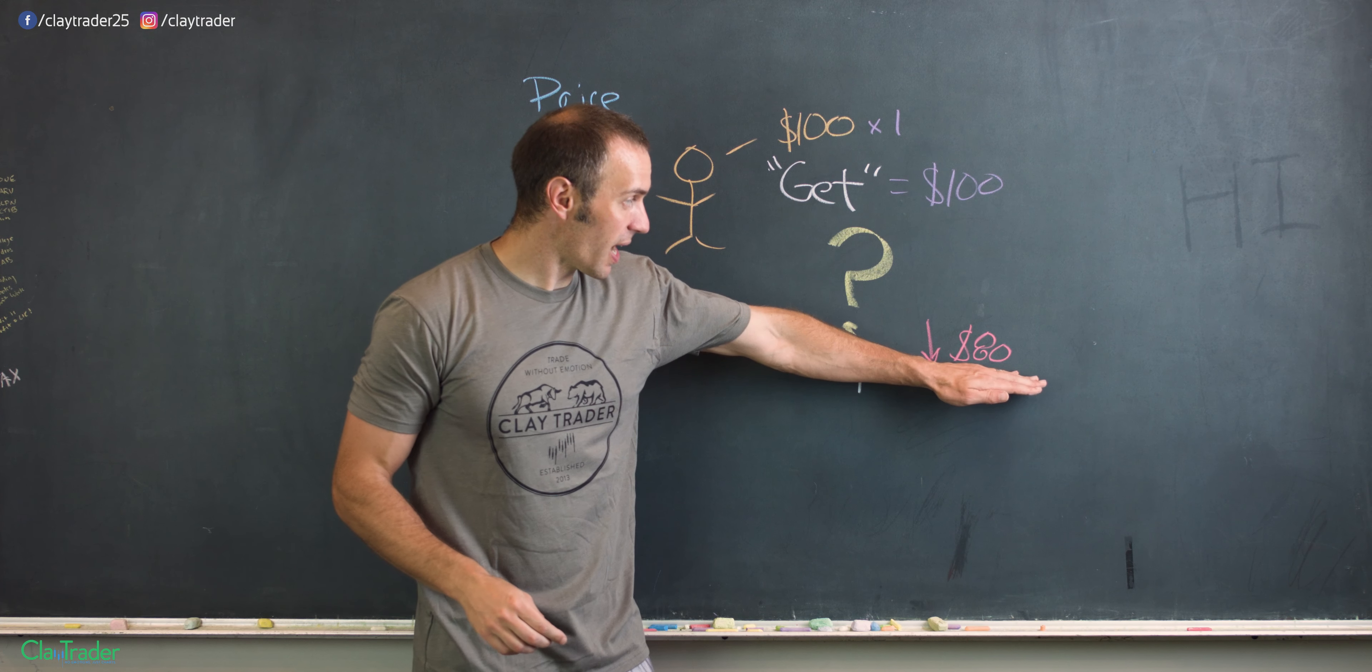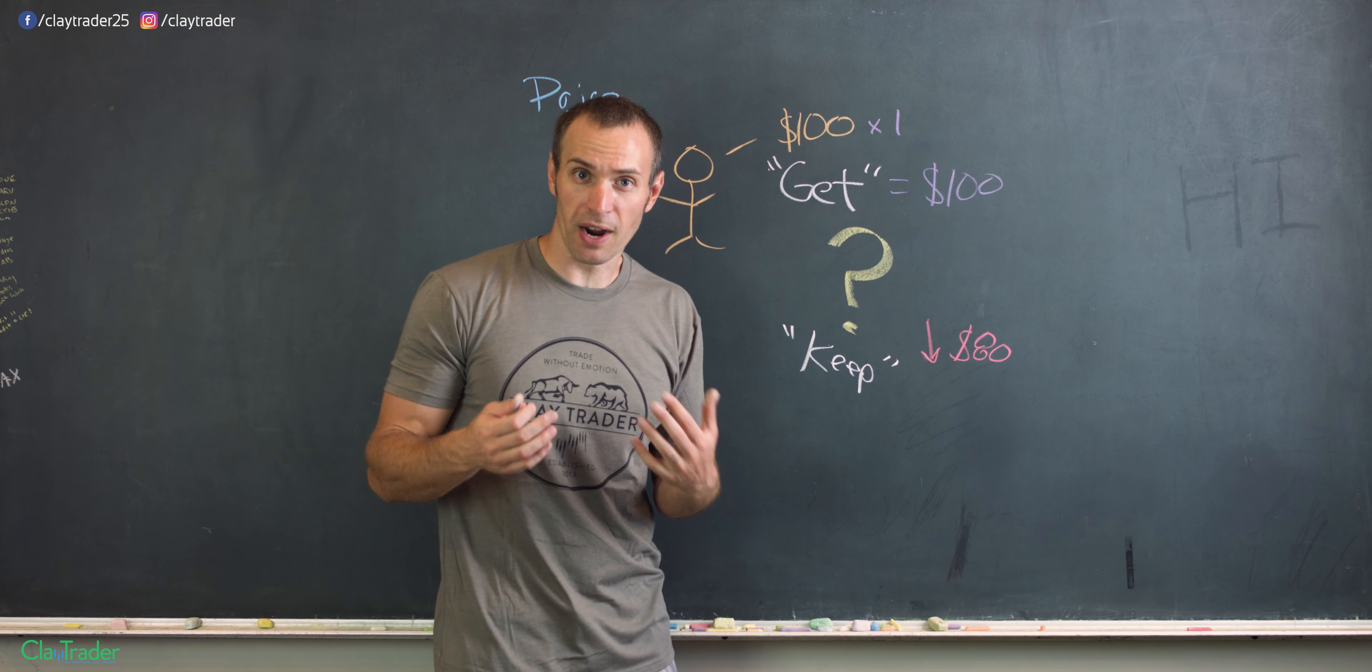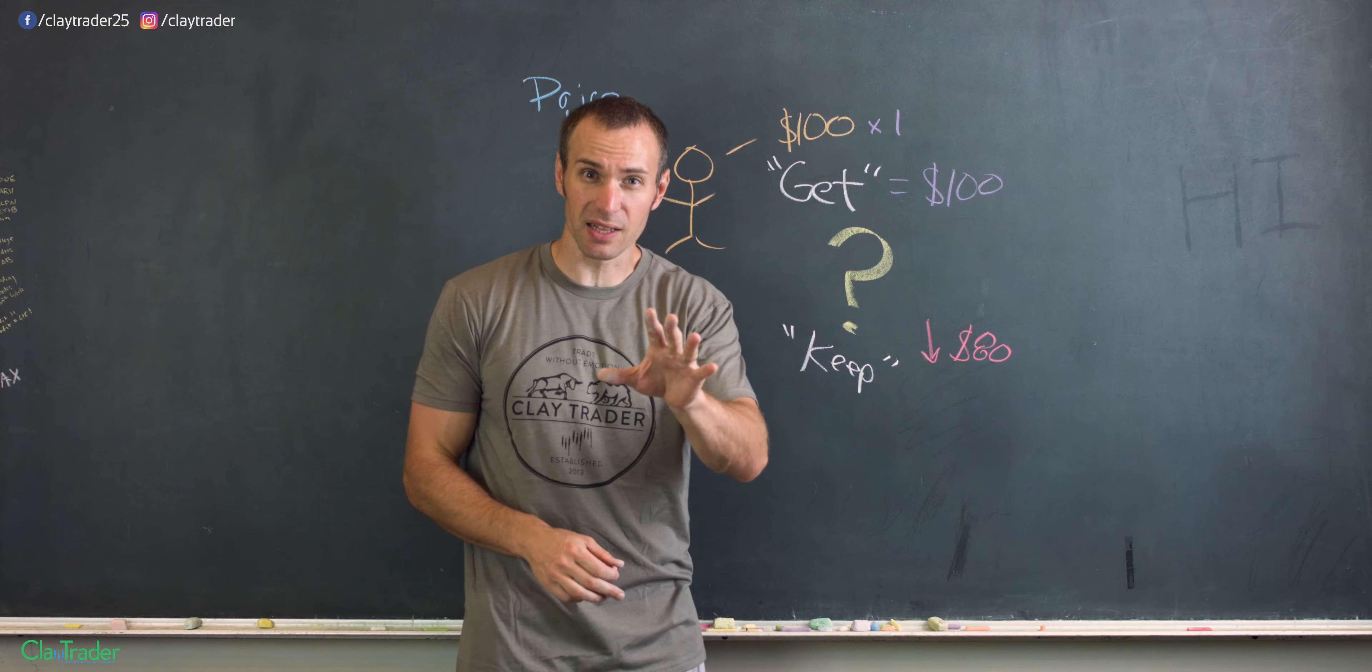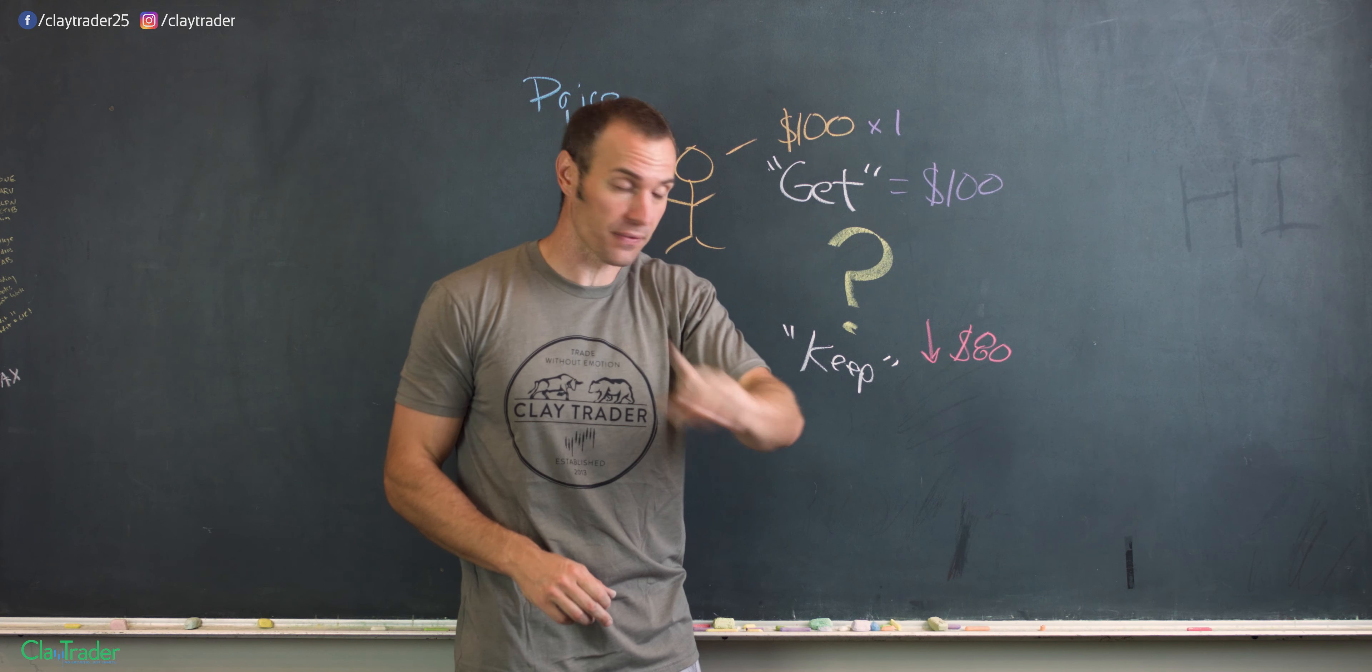So that means at this point in time, John can go out there and buy the stock for how much? Oh, here's that, well Clay, you literally just told us it dropped down to $80. Exactly. So John can buy one share of that stock for $80.